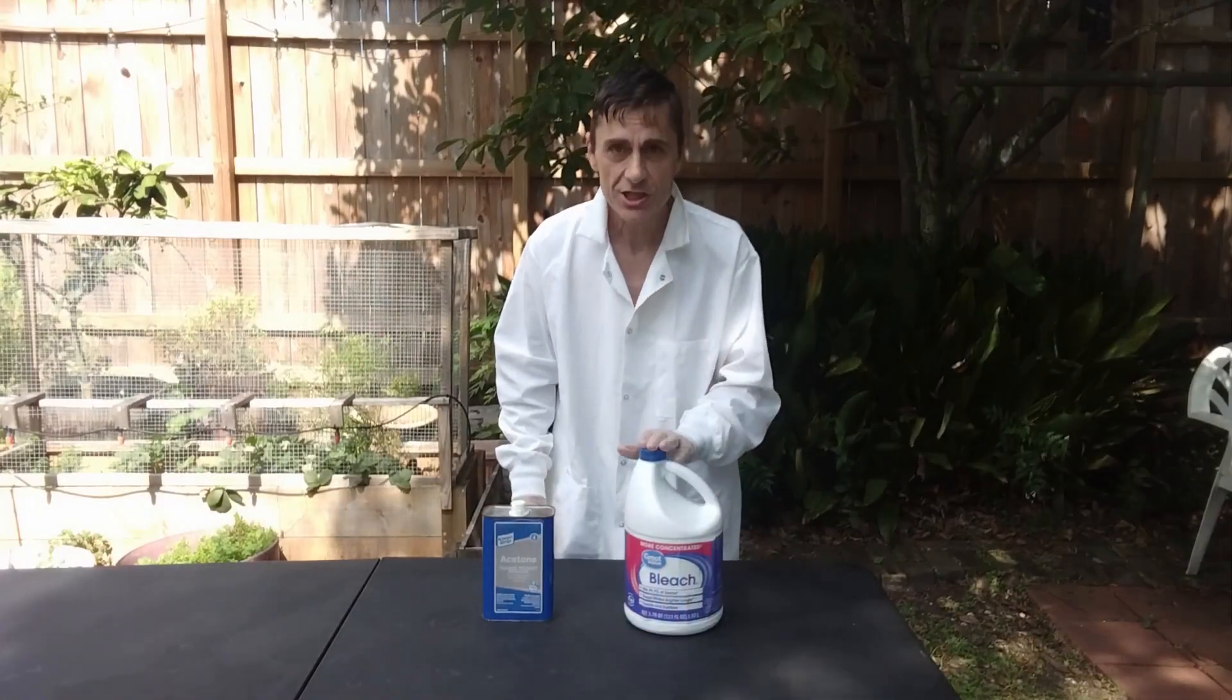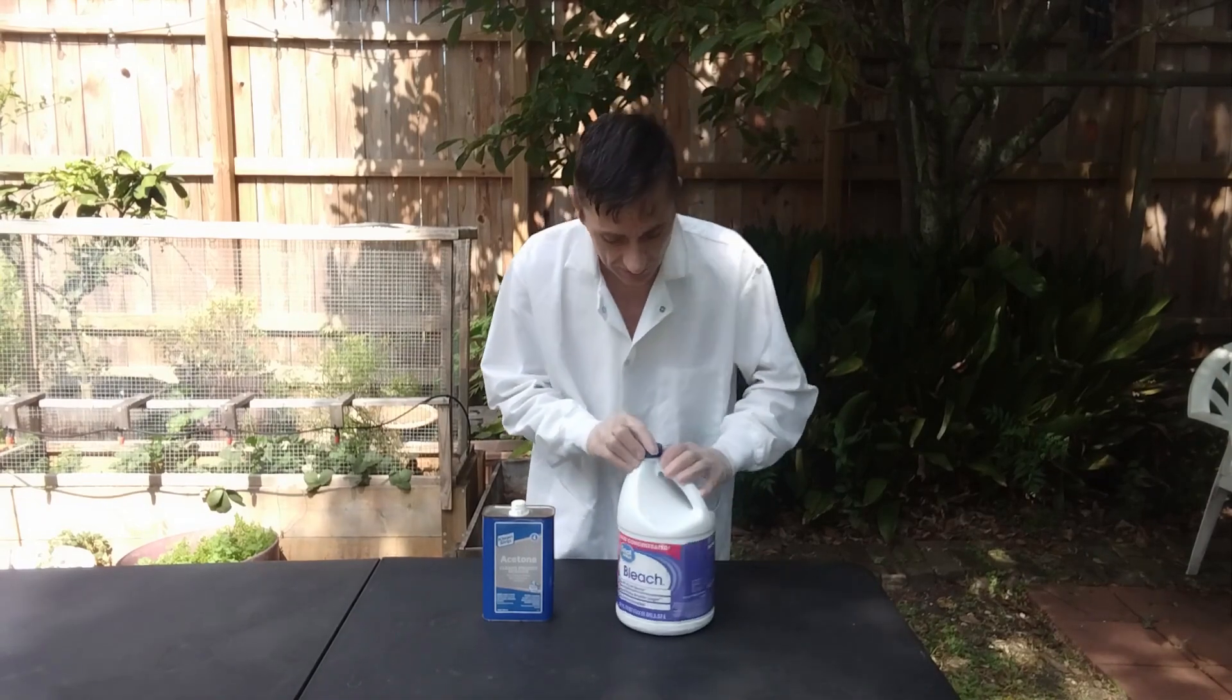The two household items that we need are bleach and acetone. It is important to know the concentration in sodium hypochlorite of your bleach. In my case, it is indicated here 7.5%. If there is no indication on your bottle, then check online for your brand of bleach.